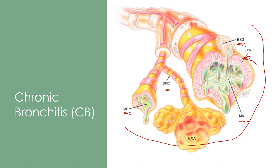Hyperinflation of the alveoli (HALV) occurs because you have smooth muscle that constricts, so gas can flow in, but when you exhale, your airways get smaller. With smooth muscle constriction and mucus plugging, you're going to trap a bunch of gas behind it in your alveoli. This can cause hyperinflation and long-term lung damage, especially if they keep having chronic bronchitis year after year.